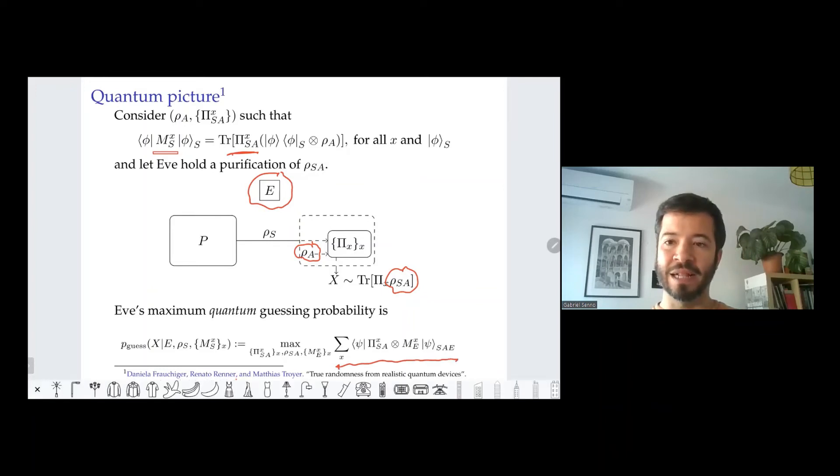Just like in the classical picture, where there could be different convex decomposition of the states and the measurement, here there are many infinite generalized Naimark dilations of the measurement, so we will let her choose the best for her task. We will maximize over this. And this is what we call the quantum guessing probability.